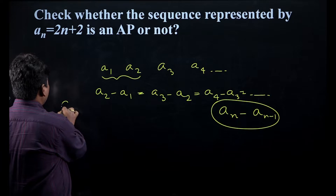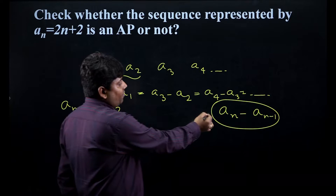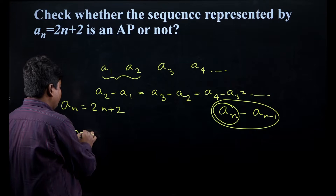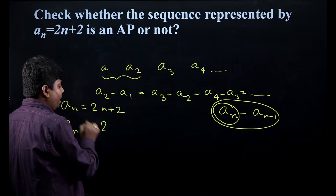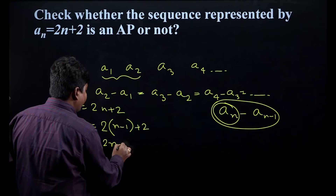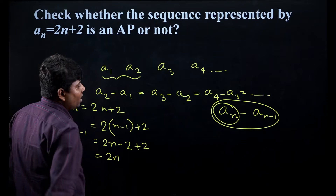Since aₙ = 2n + 2 is already given, we now need to find aₙ₋₁. We can find aₙ₋₁ very easily — we put n minus 1 in place of n. So aₙ₋₁ = 2(n − 1) + 2, which gives us 2n − 2 + 2, and we are left with 2n.